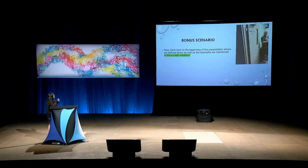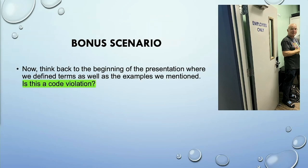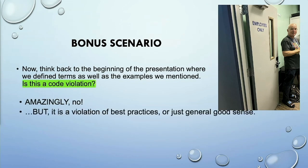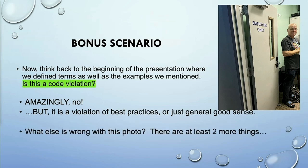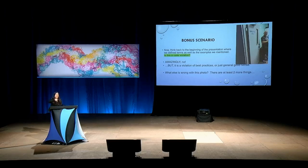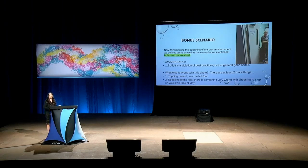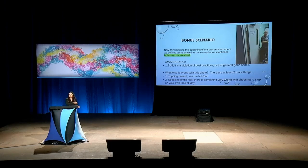Bonus scenario: think back to the terminology from the beginning. Is a certain picture representing a code violation? Amazingly, the answer is no — but it is a violation of best practices. What else is wrong with the photo? There are at least two more things: one, there's a foot right in the middle of some wiring, which doesn't seem smart. And another thing very wrong is that someone appears to be stomping on their own face all day long — check out those socks. Something very wrong with that.